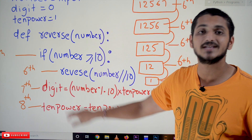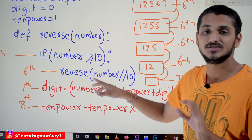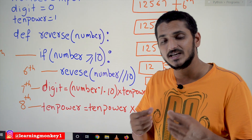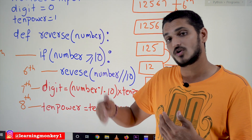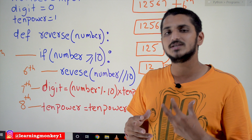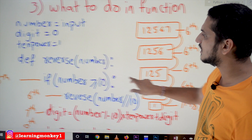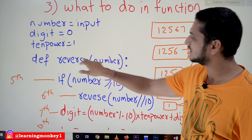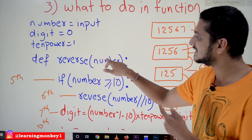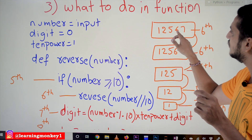The modified digit and 10_power values must be used in the next function call, which is why these two variables are taken as global. Let's understand step by step how this code executes. This is a basic class on recursion, so we are explaining each and every point. These basics will help you a lot when understanding complex programs later.